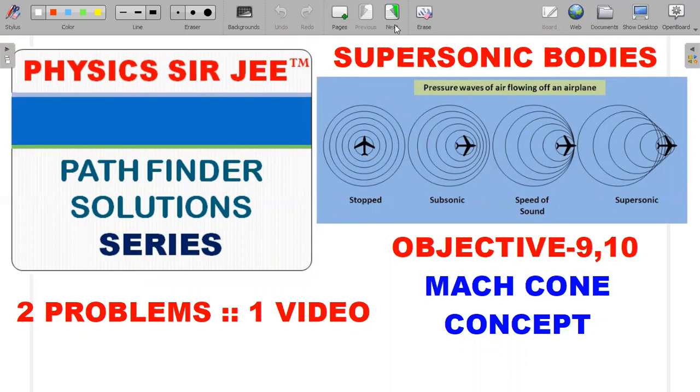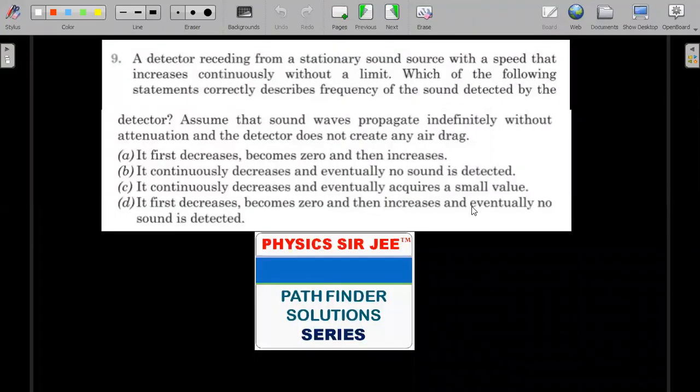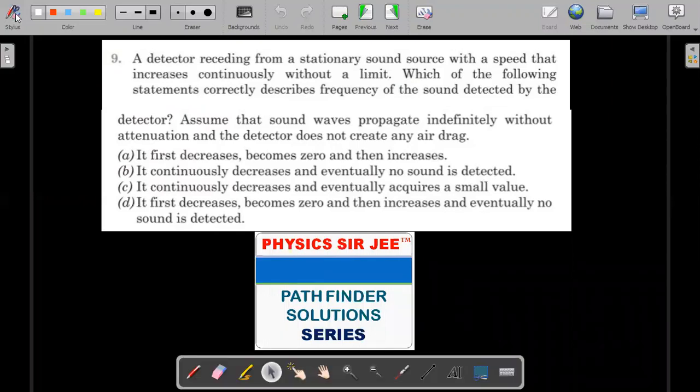This is question number nine. A detector receding from a stationary sound source with a speed that increases continuously without limit. Which of the following statements correctly describe the frequency of the sound detected by the detector? Assume that the sound waves propagate indefinitely without attenuation and the detector does not create any air drag. He is talking about how this frequency as a function of time changes as the detector moves away from a stationary source.